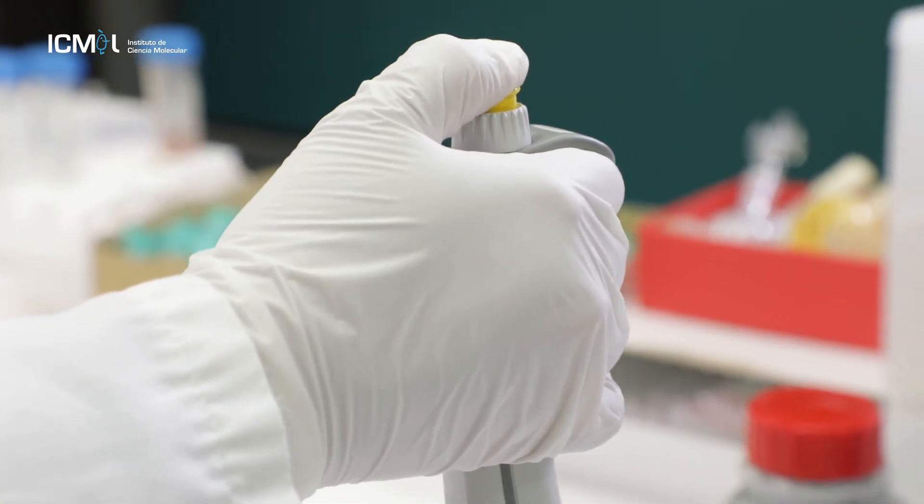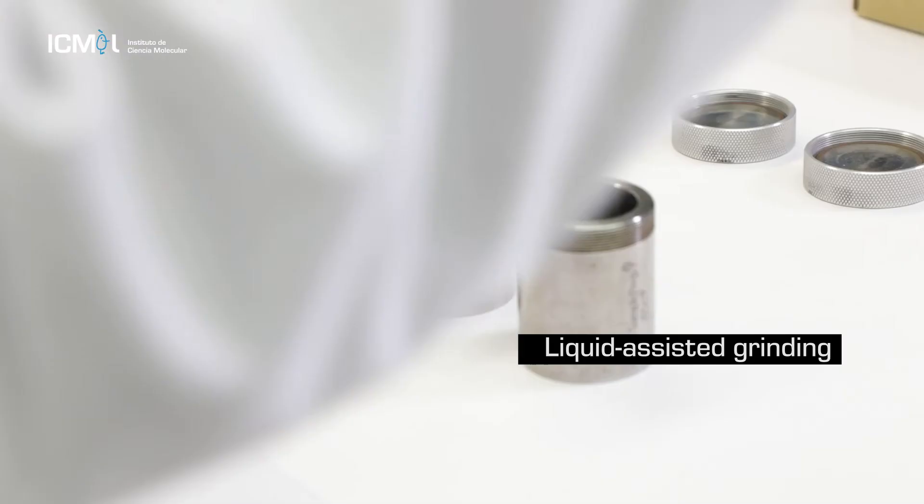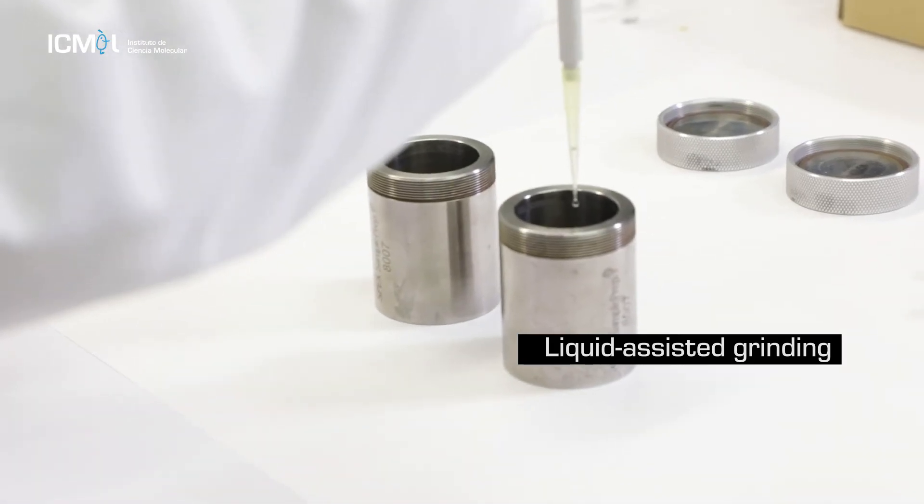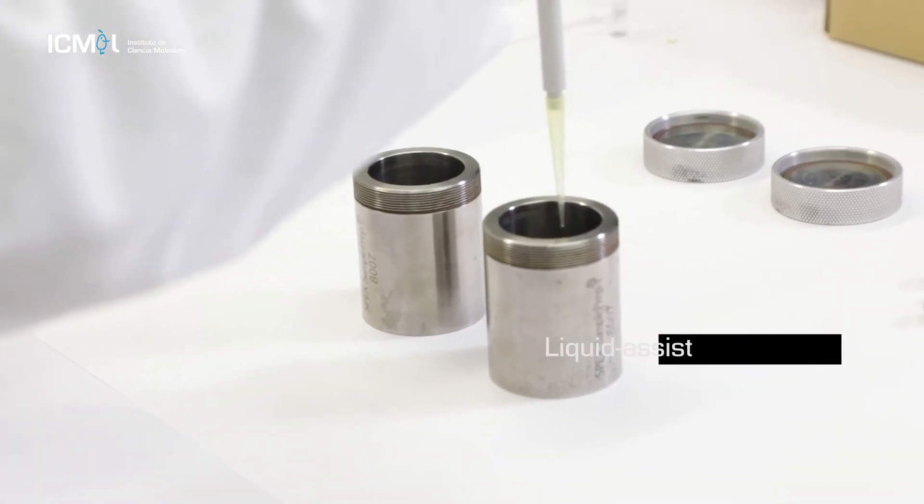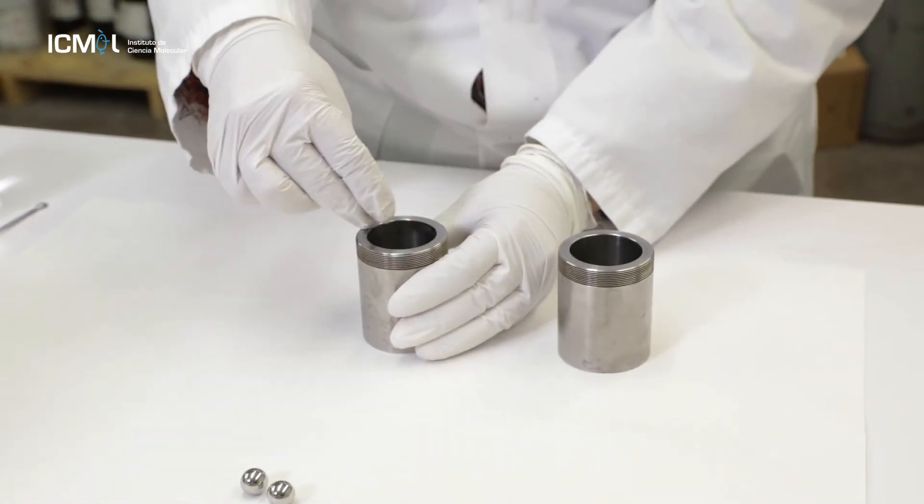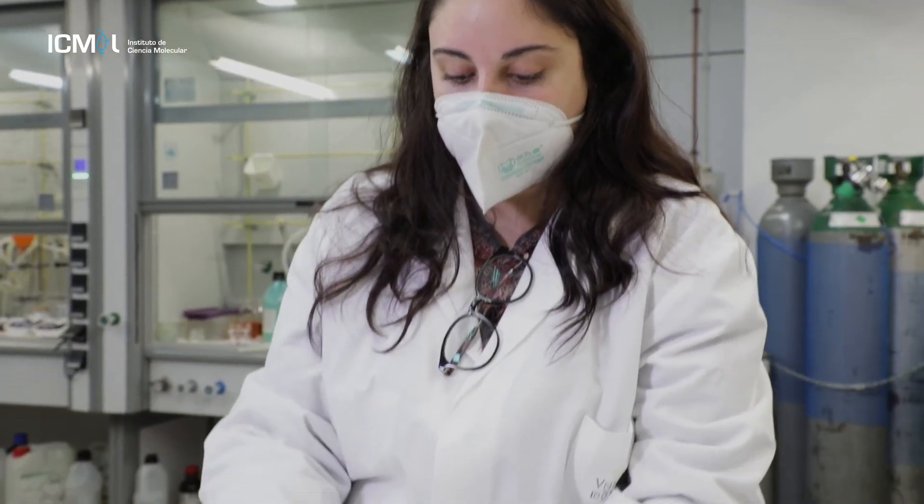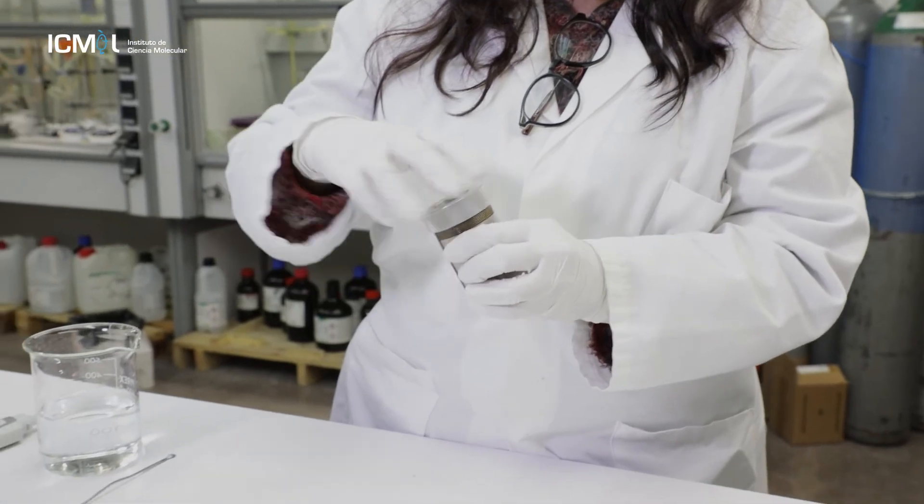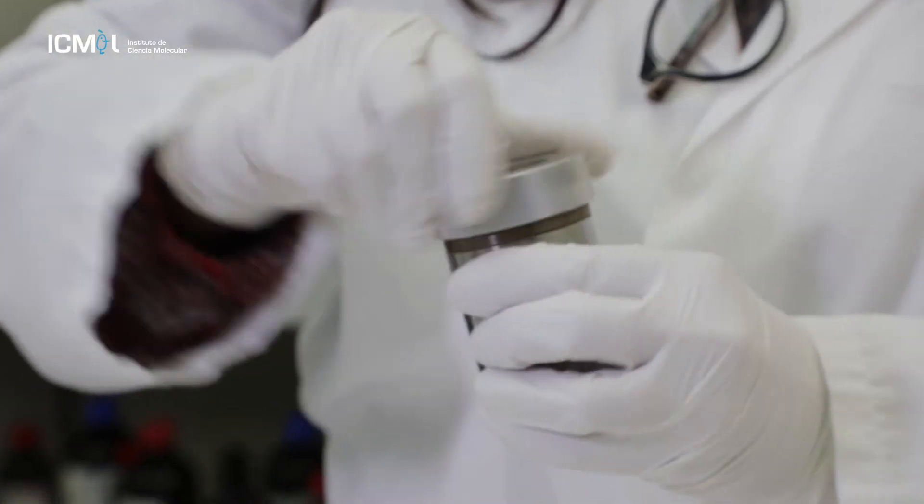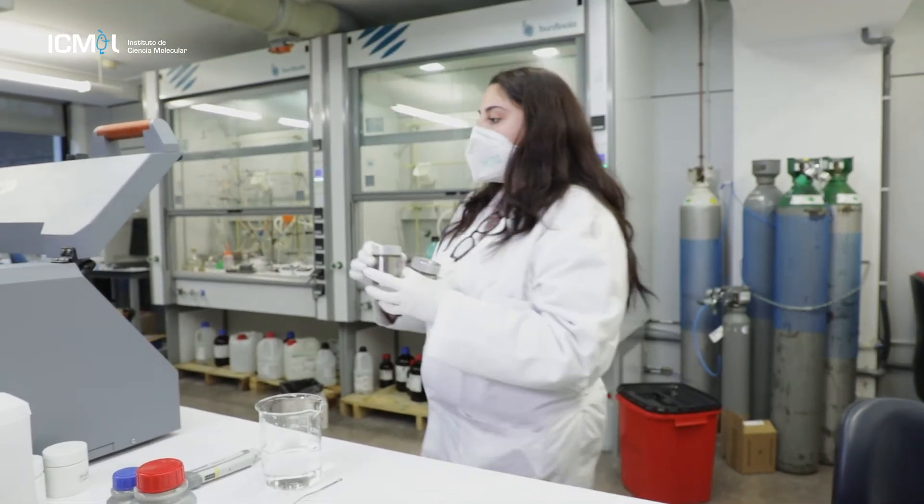This technique we also call liquid assisted grinding relies on the use of this type of equipment. This is an automated ball mill solution and we use this just compared to the conventional solvothermal reactions. In this case, we can replace the thermal heating by this mechanical milling process that ensures the energy necessary for the reaction to take place.